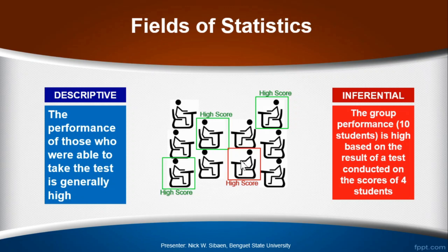On the other hand, it is inferential if we want to infer about the performance of all ten students using the scores of the four takers. What can we say about the performance of the entire group and not only those four? If you are doing that, then you are applying inferential statistics — you have a sample, you investigate the sample, and come to a conclusion about a bigger group than the sample you actually gathered data from.